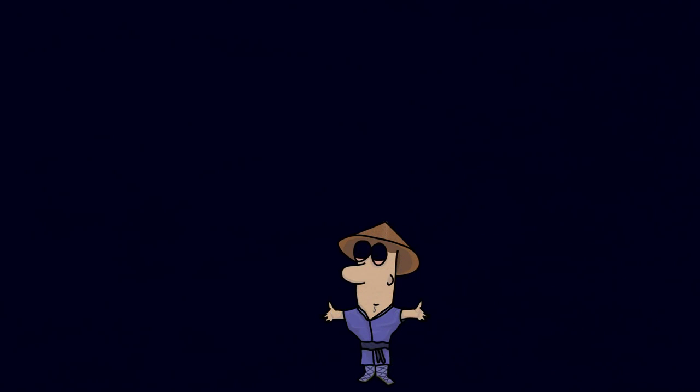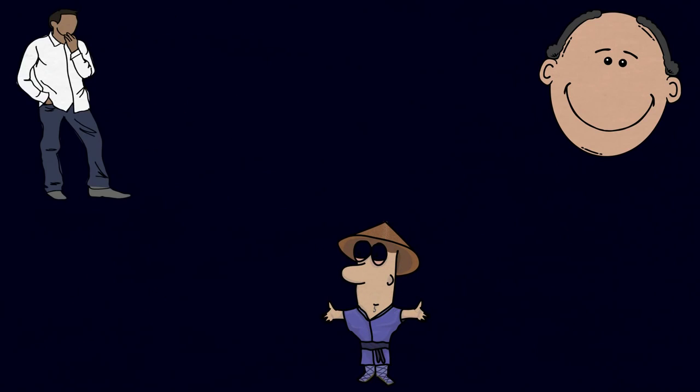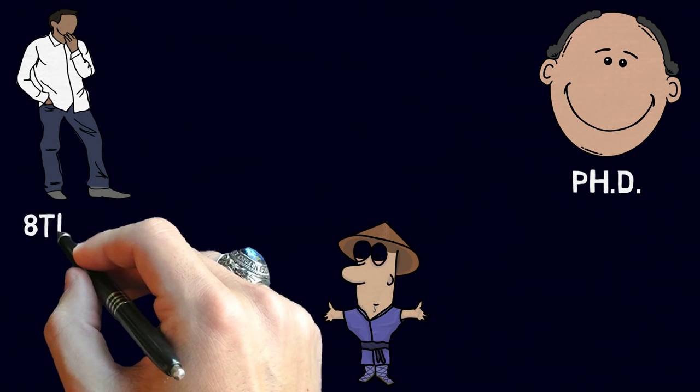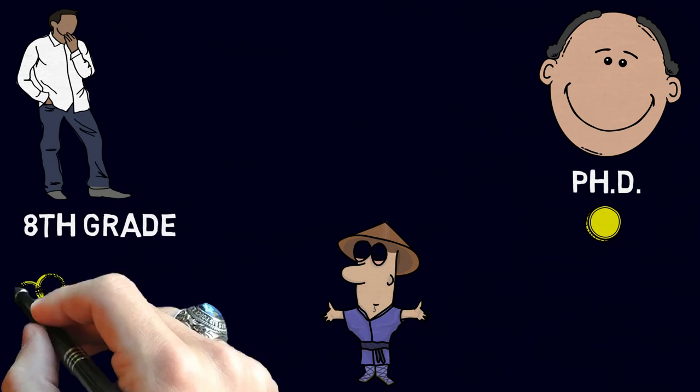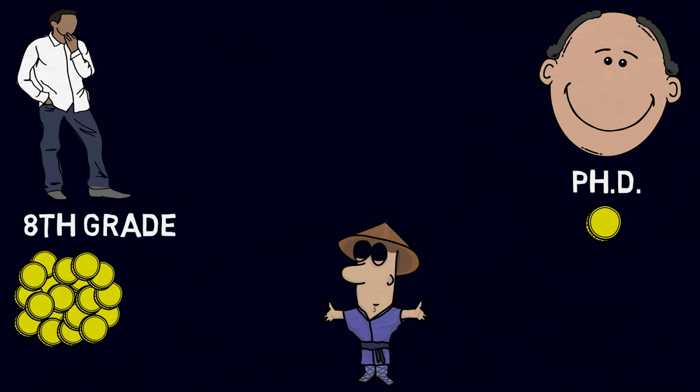Here's little Robert Kiyosaki. He has two fathers, one of them has a PhD, the other never finished 8th grade. Both earn substantial incomes, yet one always struggles financially, while the other is going to become one of the richest men in Hawaii.